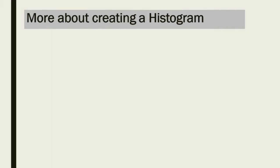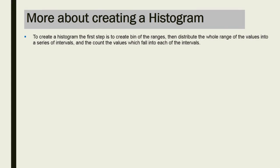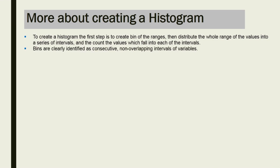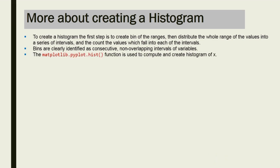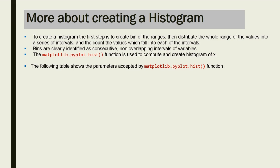To create a histogram, the first step is to create a bin of ranges, then distribute the whole range of values into a series of intervals and count the values which fall into each bin. Bins are clearly identified as consecutive, non-overlapping intervals of variables. The matplotlib.pyplot.hist() function is used to compute and create the histogram. The following table shows the parameters accepted by matplotlib.pyplot.hist().